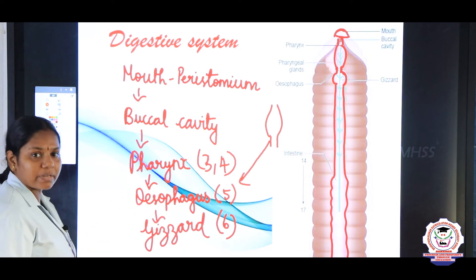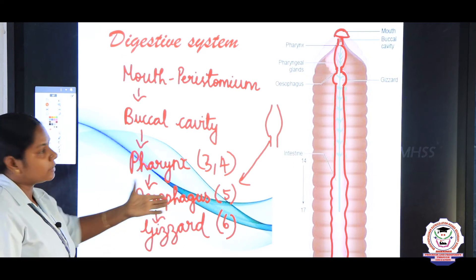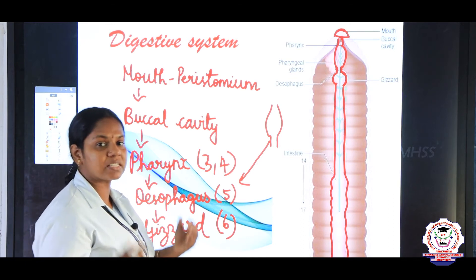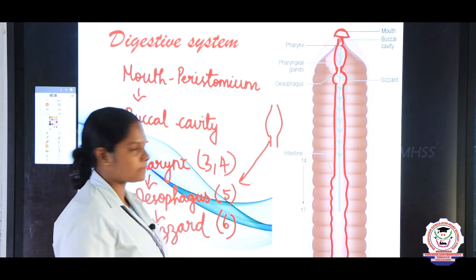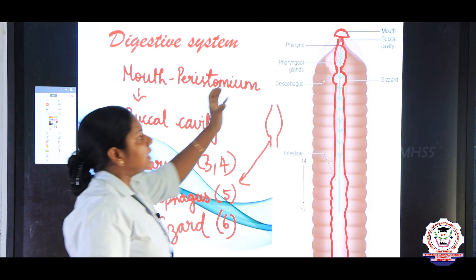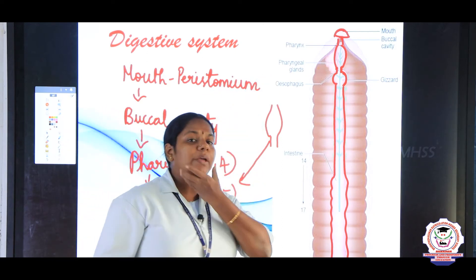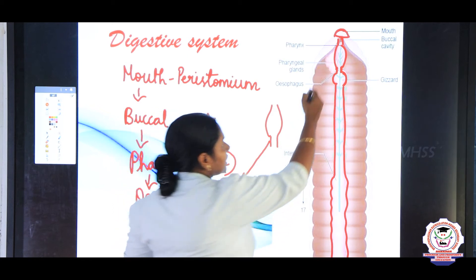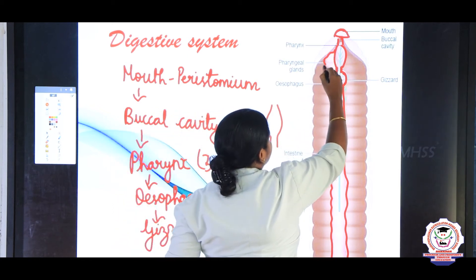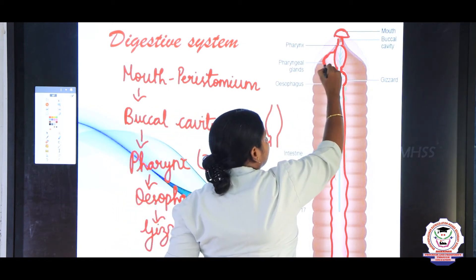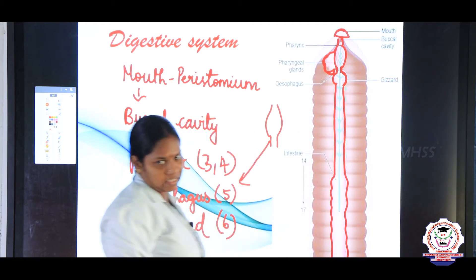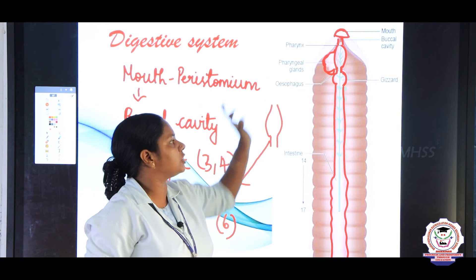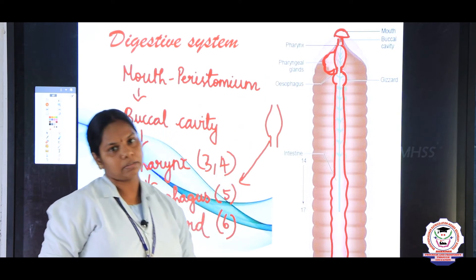Some digestive glands are also associated with the alimentary canal, helping in secreting mucus. Just as we possess salivary glands near the mouth, the earthworm possesses pharyngeal glands near the pharynx. Because these glands are located near the pharynx, they are called pharyngeal glands.